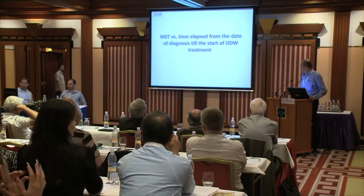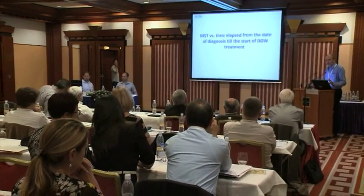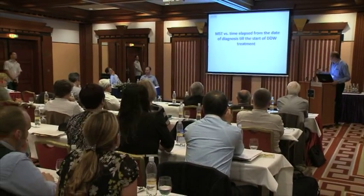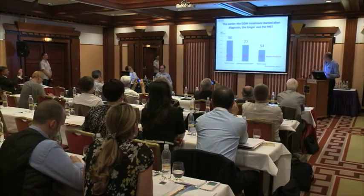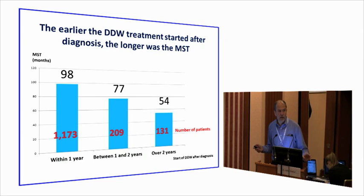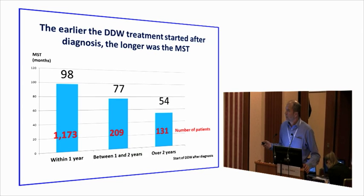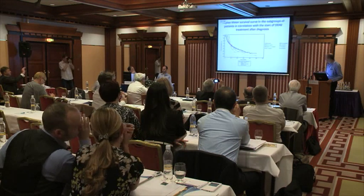Another key factor is when cancer patients start DDW therapy. We asked: what is the median survival time for patients who started DDW within one year after diagnosis, within one to two years, and over two years? Those who started within one year after diagnosis had a median survival time of almost 100 months. Those who started two years later had roughly half that number. The Kaplan-Meier curves show this clearly.